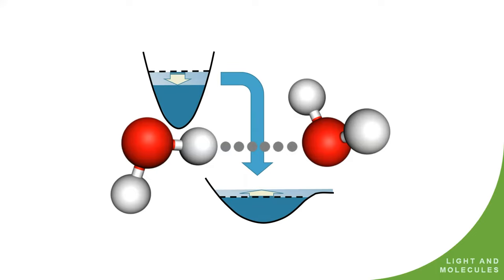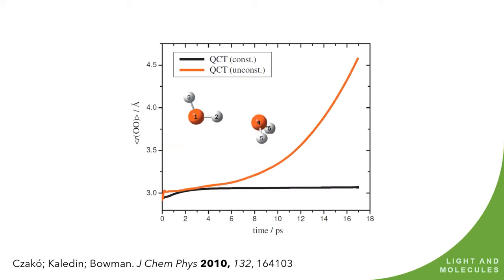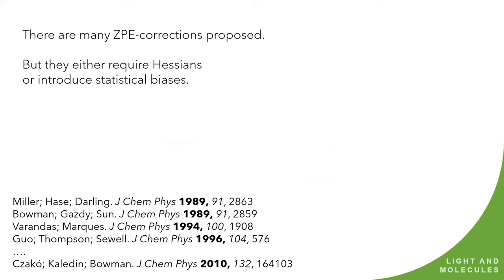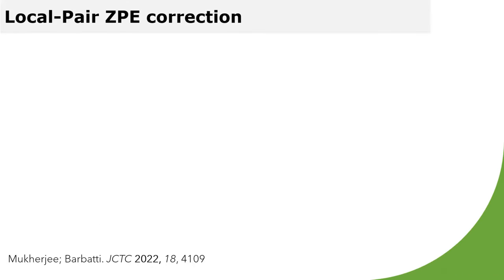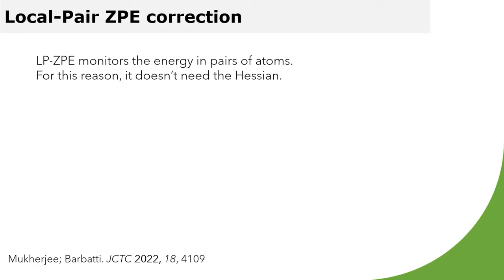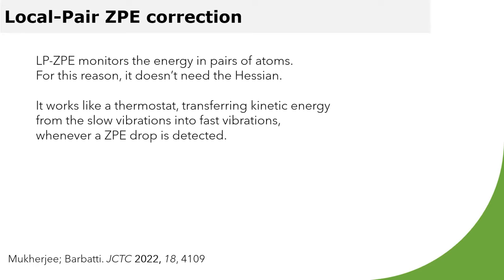ZPE is another problem that you don't look at very often, but it's there. There's ZPE spilling every time that you are using a method that's based on classical dynamics. If you have a hard degree like the OH vibration in this dimer, and you have a soft degree like this dimer vibration, you may have an artificial transfer of energy from the hot to the cold. And this is going to cause a dissociation of your dimer that's completely artificial. You know that very well. People have been discussing this for decades. The big names in dynamics like Miller, Hase, Bowman, Varandas, all of them discussed how to solve the ZPE problem. And most of the methods proposed depend on calculation of Hessians. That's kind of bad for us doing on-the-fly dynamics.